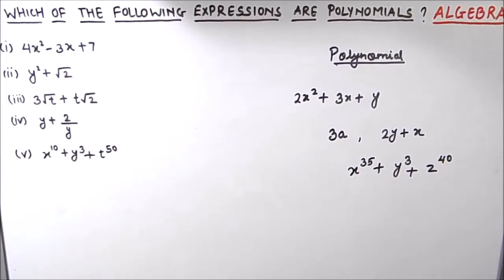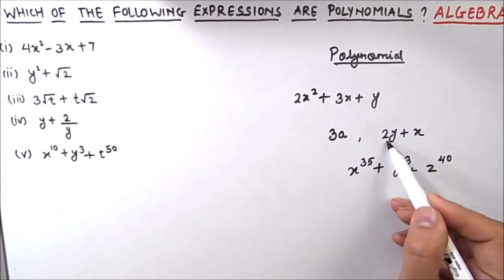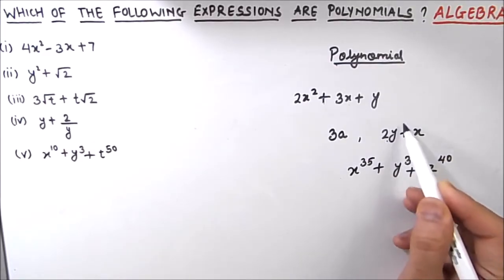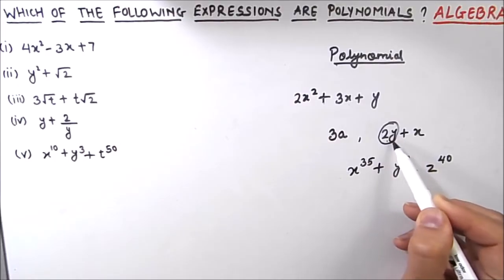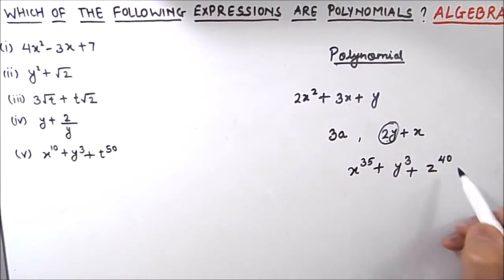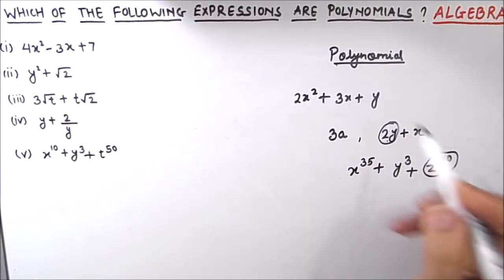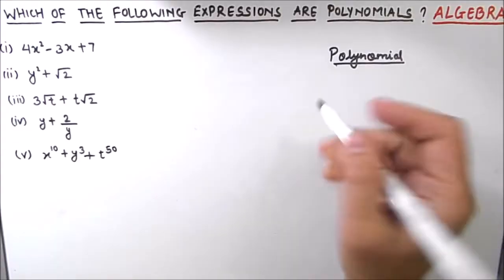There are a few things we need to know about polynomials. The coefficient and the variable together make a term. Each part of the expression — 2x squared, 3x, y — is called a term. So all these are called terms in the polynomial.